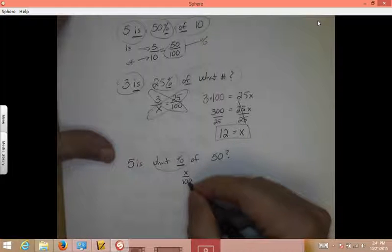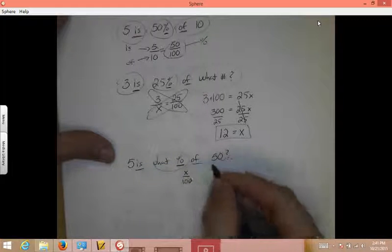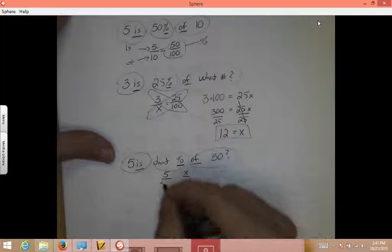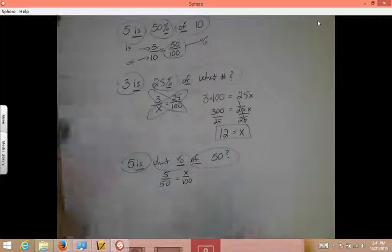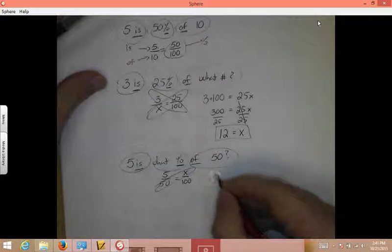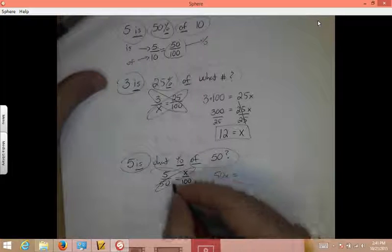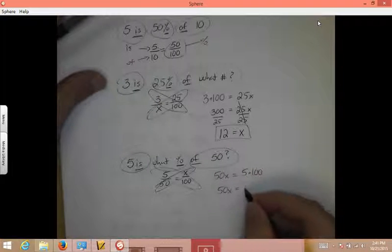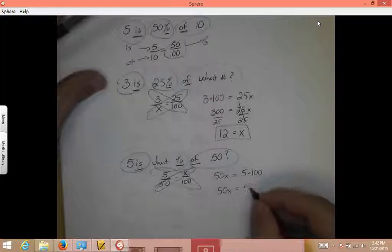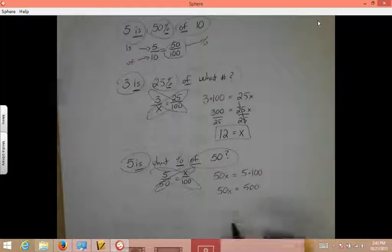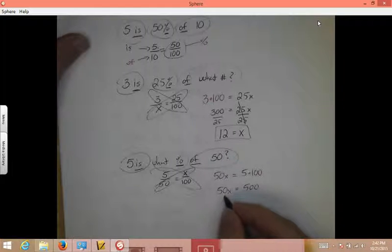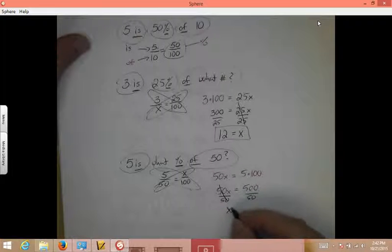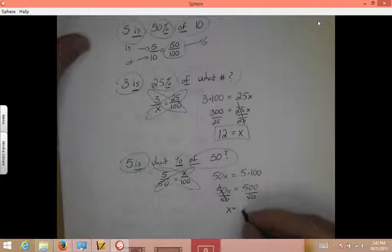Now I'm going to look for my is and my of. My is is five. Is goes on top. My of is fifty. Of goes on bottom. Now, cross products. In one loop, I've got fifty times X. In my other loop, I've got five times a hundred. Let's simplify this. Fifty X equals five times a hundred. And five times a hundred is five hundred. Now I've got fifty times X equals five hundred. The opposite of multiplication is division. So I'm going to divide by fifty on both sides. That cancels. I have X. On this side, five hundred divided by fifty is going to equal ten.